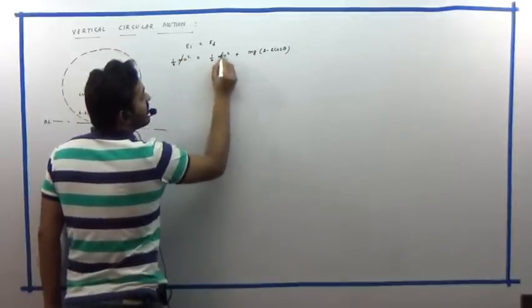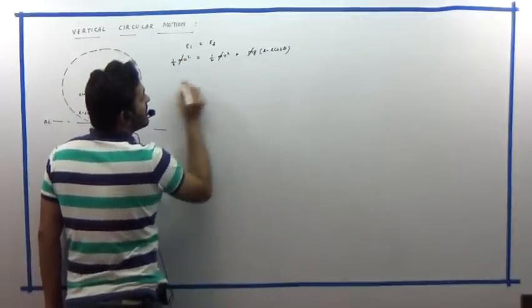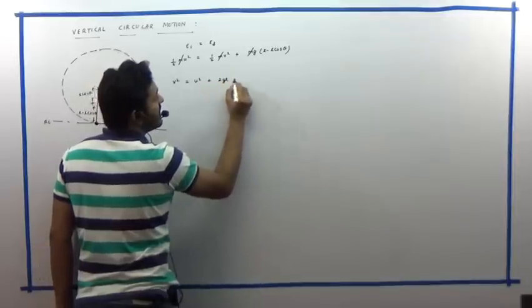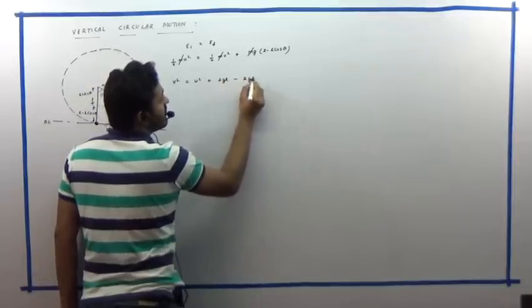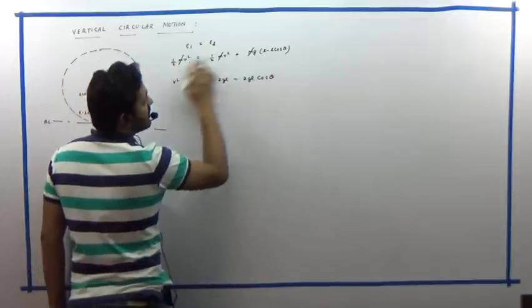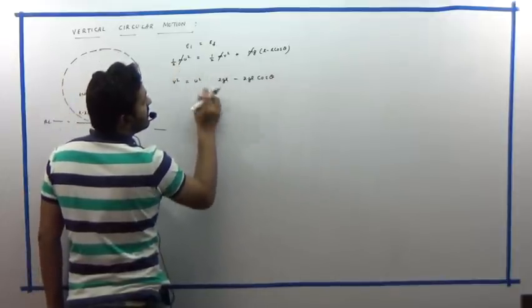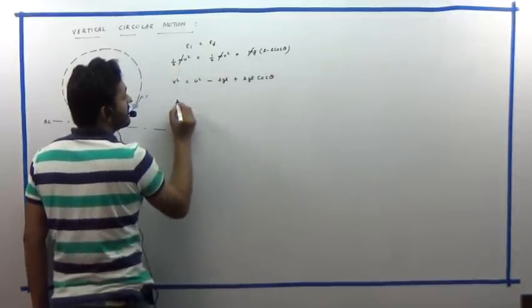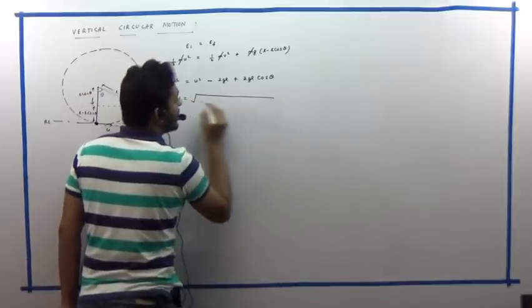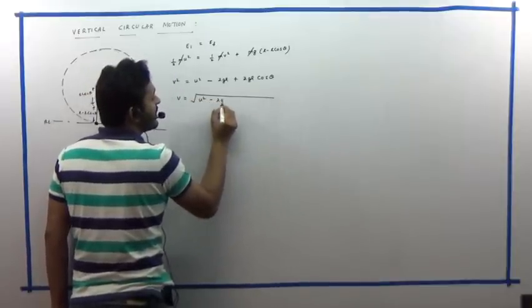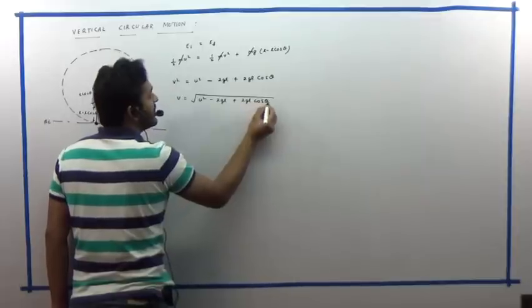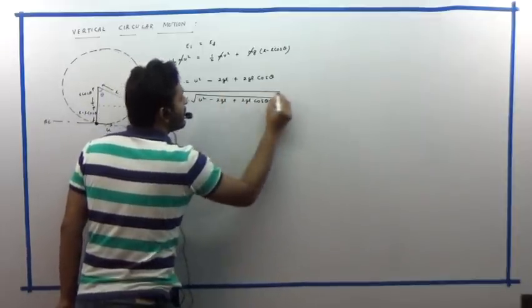Writing the equation for v², we get: v² = u² − 2gL + 2gL·cosθ. This is the first key equation for vertical circular motion.